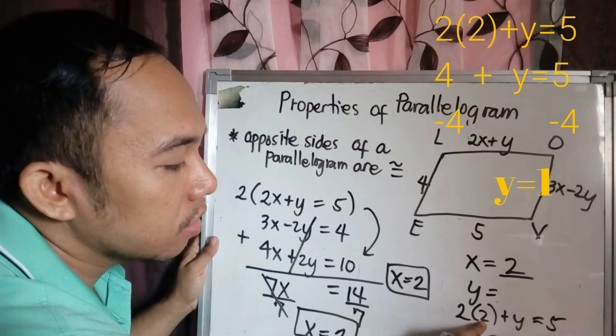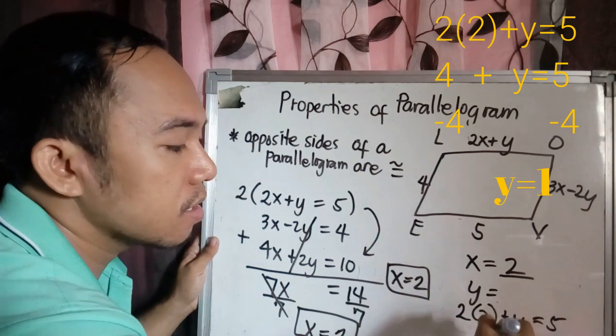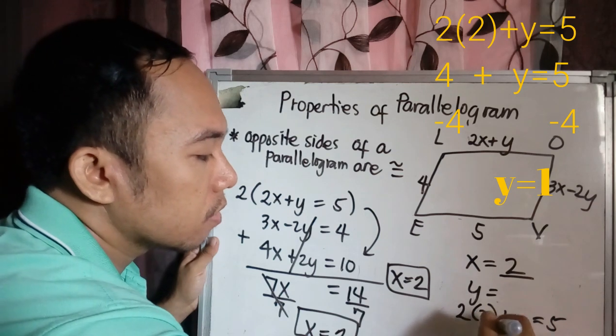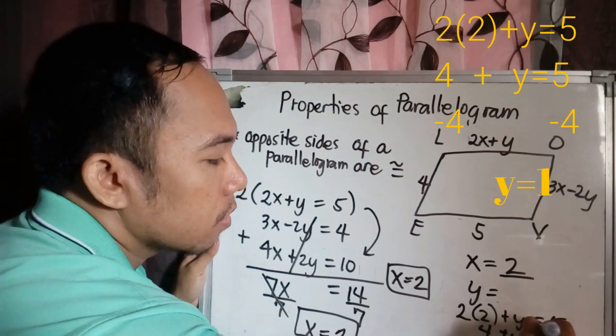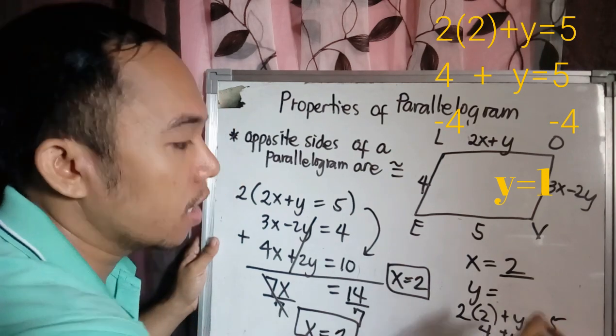Then eliminate 4 by subtracting both sides. So minus 4 both sides, your Y is 1.